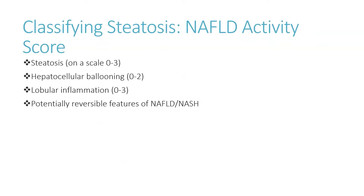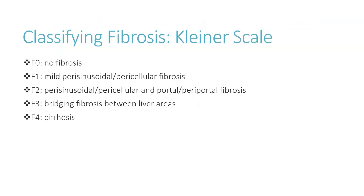In order to classify steatosis, an important scoring tool is the NAFLD Activity Score, or NAS. It goes on a scale from 0 to 8, with 8 being the most severe. These criteria represent the potentially reversible features of NAFLD and NASH, with hepatocellular ballooning being the defining criteria for NASH or steatohepatitis specifically. There is also a separate scale to classify fibrosis, going from no fibrosis to cirrhosis, which has a stronger correlation with liver-related death. The scarring and fibrosis are not as easily reversible as the steatosis.